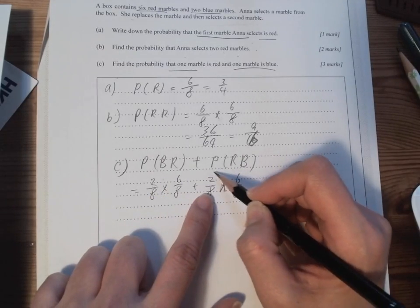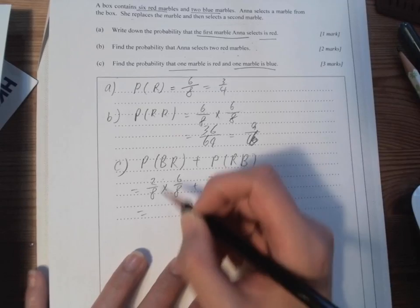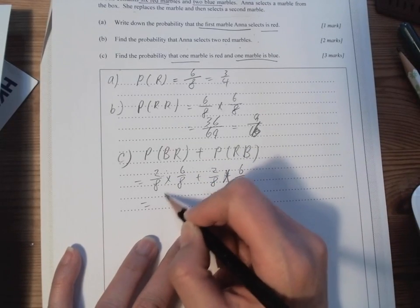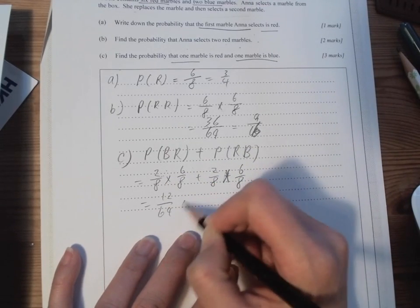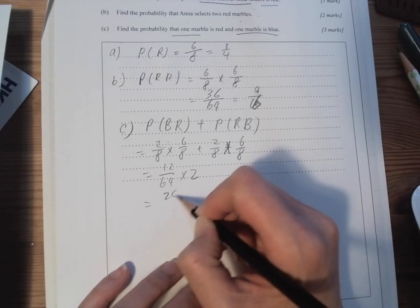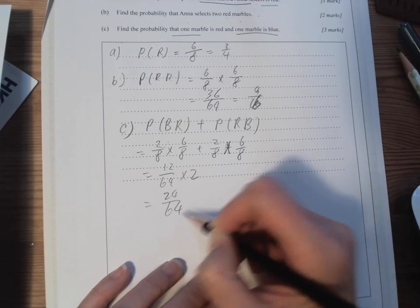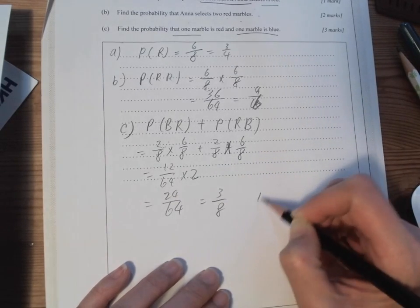Like this is blue, red, and red, blue, they're the same, so we have 12 over 64 times 2, so we have 24 over 64, and simplify it, we've got 3 over 8, nice and easy.